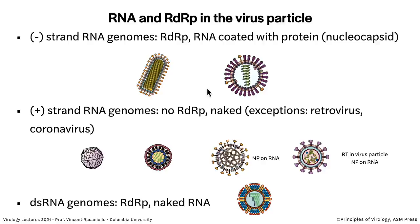There's a relationship between the polarity of the RNA and whether a polymerase is in the particle. Negative-strand RNA genomes — the particle contains the RNA-dependent RNA polymerase, and the RNA is coated with protein in a nucleocapsid. Here for VSV, and here for influenza, the RNA-protein complex is the nucleocapsid. This is negative strand, so it has to bring a polymerase with it. Because if negative-strand RNA gets into a cell without a polymerase, it will get degraded — nothing will ever happen.